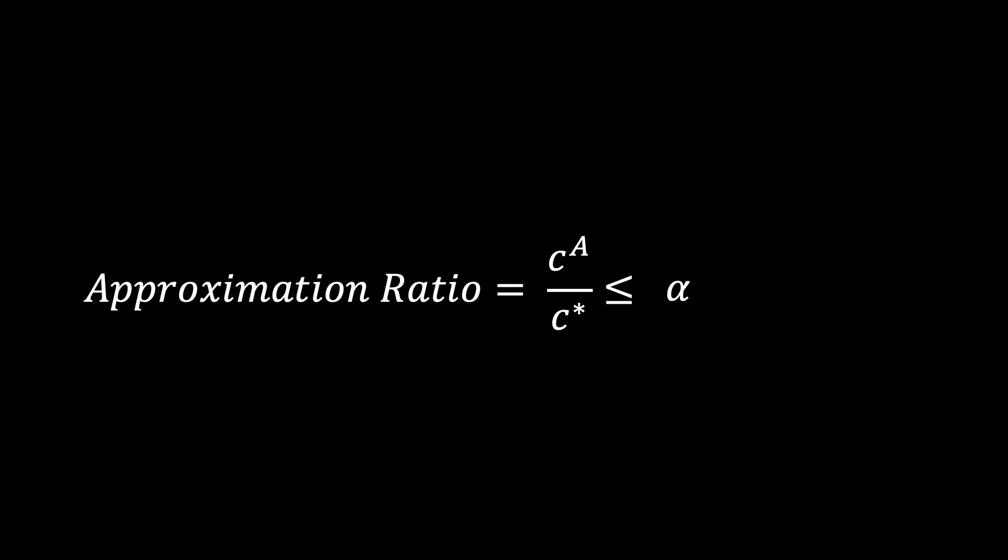How much better? An algorithm with an approximation ratio of 1 would solve the problem perfectly. We know that vertex cover is an NP-hard problem, so we cannot hope for a polynomial time exact algorithm. But can we get close?